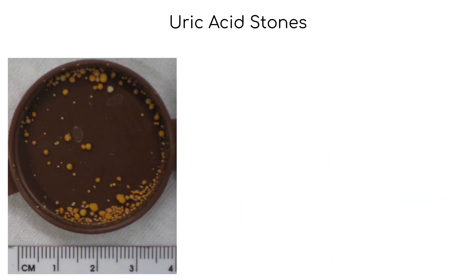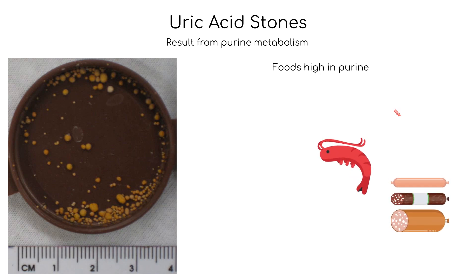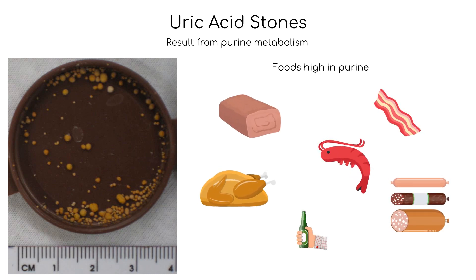Uric acid stones result from the metabolism of purine and amino acid. An excess of purine can lead to higher productions of monosodium urate, which can form stones. Foods high in purine include organ meats, shellfish, bacon, turkey, veal, and alcohol.